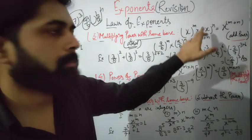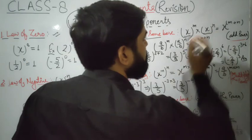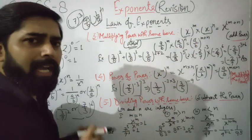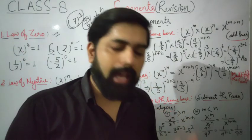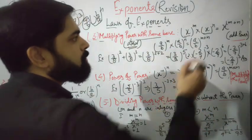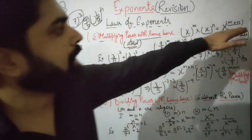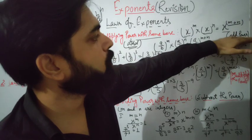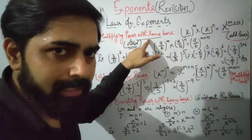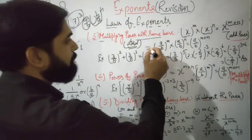So: x to the power m multiplied by x to the power n — look, both bases are the same, but powers m and n are different integers. The result is x to the power m plus n. Similarly, in fraction form, a upon b to the power m multiplied by a upon b to the power n gives a upon b to the power m plus n.